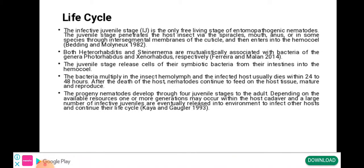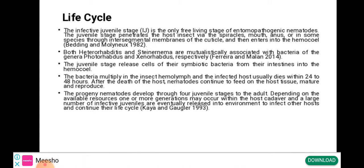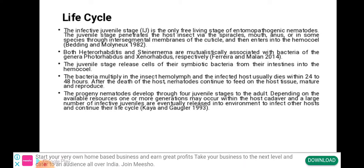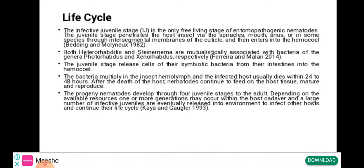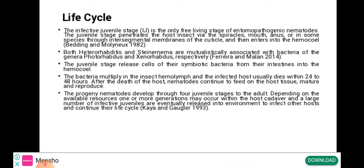The infective juvenile stage is the only free-living stage of entomopathogenic nematodes. This juvenile stage penetrates the host insect via the spiracles, mouth, anus, or in some species through the intersegmental membranes of the cuticle. The nematode then enters the hemocoel. Both Heterorhabditis and Steinorhabditis are mutualistically associated with bacteria of the genera Photorhabdus and Xenorhabdus, respectively.